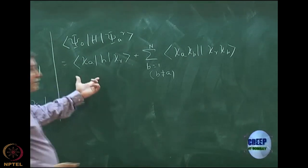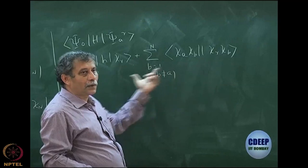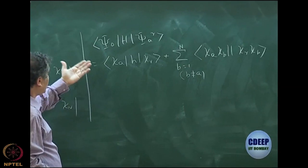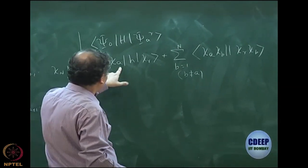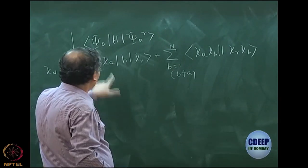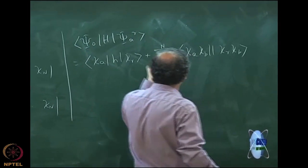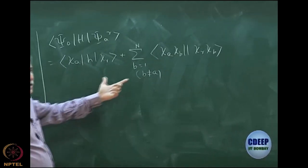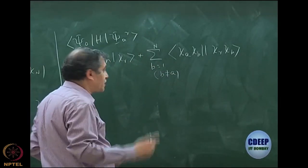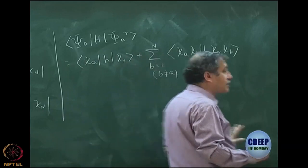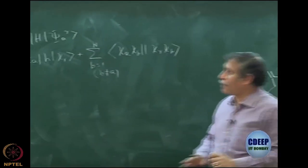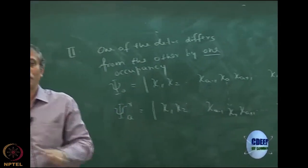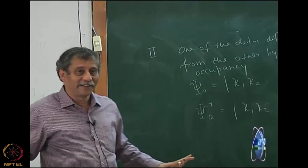This is the type 2a — the one-electron part. This is the type 2b — the two-electron part. Clearly from the expectation value, terms simplify to a single term and one summation. This is the Slater rule for any arbitrary determinants of this type, and we are not suggesting that the spin orbitals are Hartree-Fock.